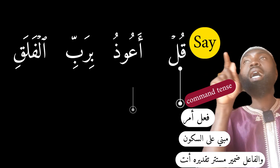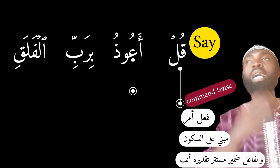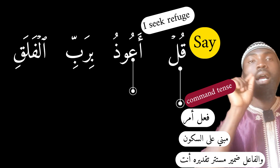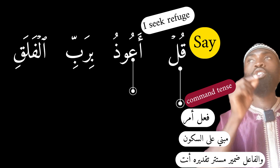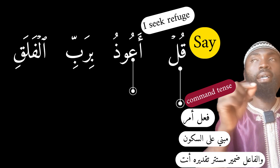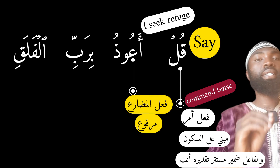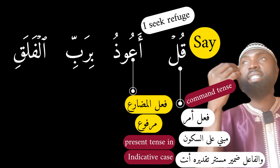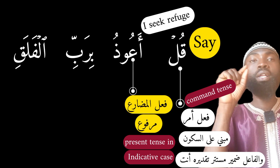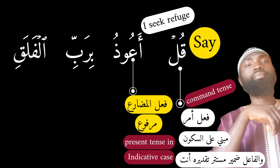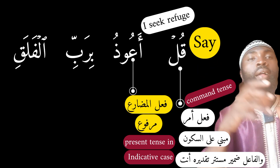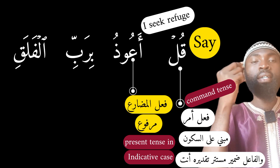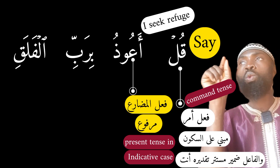So 'Qul' means 'say.' The next word is 'A'udhu,' which means 'I seek refuge' or 'I seek protection.' Grammatically, 'A'udhu' is a present tense verb — marfu', carrying damma. So 'A'udhu' means 'I seek refuge.' So 'Qul A'udhu' means 'say, I seek refuge.'